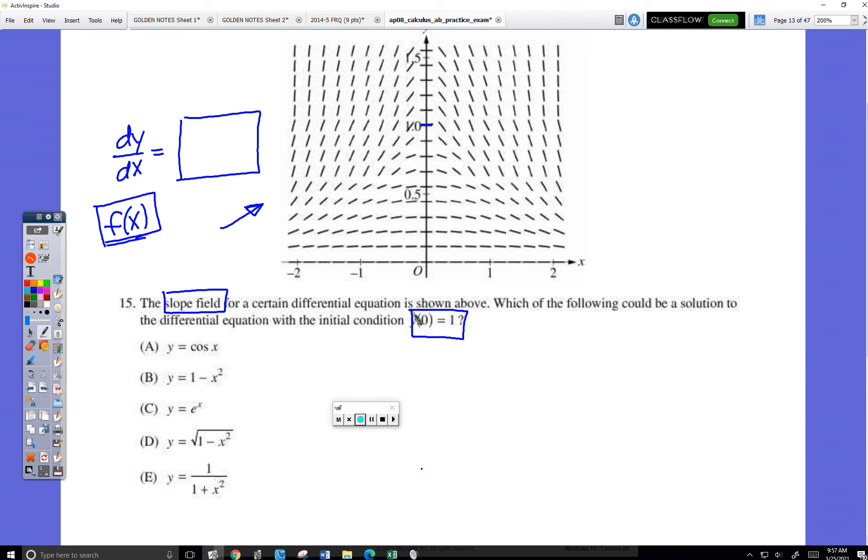Don't think of it as a graph. A graph is just points, x's and y's. And so you can have a graph of f, you can have a graph of f prime. A slope field is a picture of what slopes of f look like. It's a picture of what slopes of f look like.